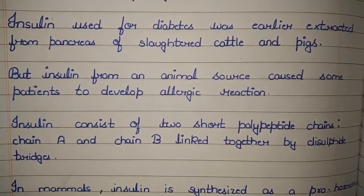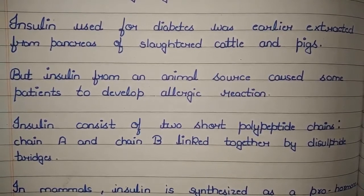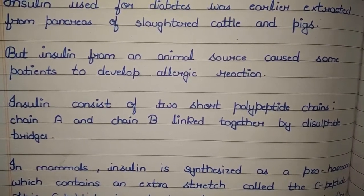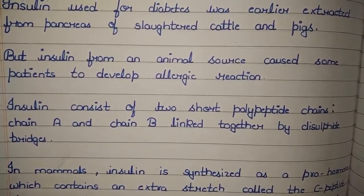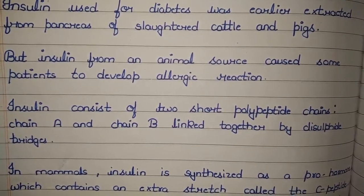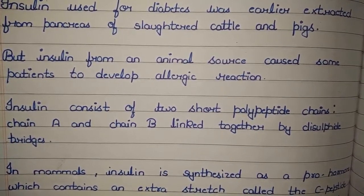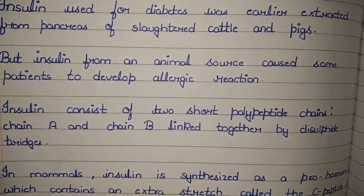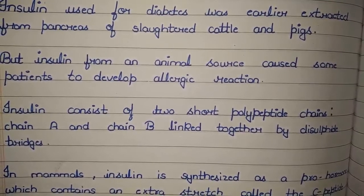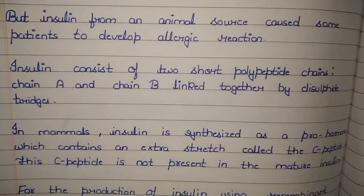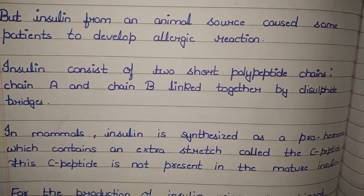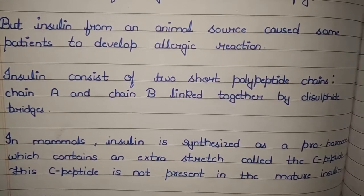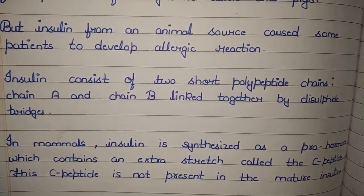Insulin consists of two short polypeptide chains — chain A and chain B — linked together by disulfide bridges. This is mature insulin. In mammals, including human beings, insulin is synthesized as a pro-hormone which contains an extra stretch called the C peptide. This C peptide is not present in the mature insulin.